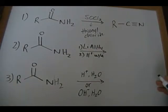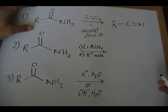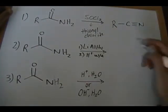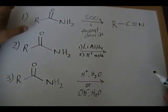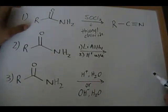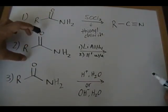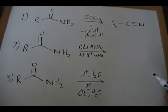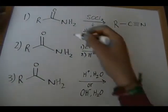Whenever you react an amide with thionyl chloride you get a nitrile. Importantly, for this reaction to occur you need a primary amide — you cannot have any carbon groups attached to the nitrogen. This reaction specifically works best with primary amides. You know it's a primary amide because the nitrogen is attached to one carbon group, making it primary.